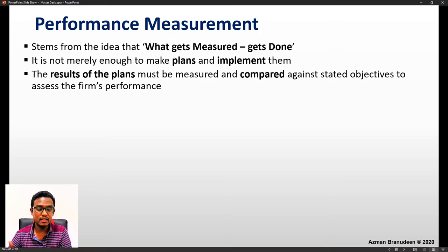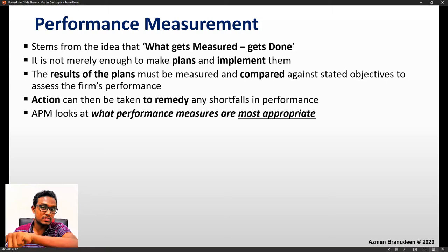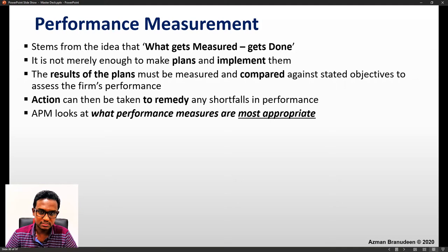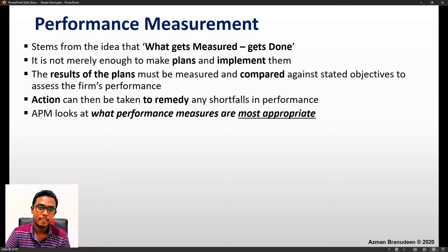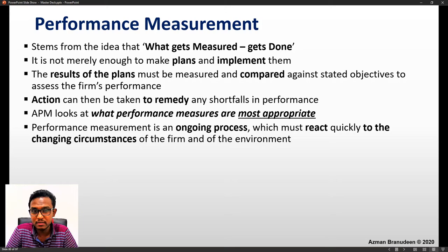You have to compare your performance against a plan, which means you must have measured what you did to understand whether you did well or badly — that is where performance measurement comes in. Action can be taken to remedy any shortfalls, and APM looks at what performance measures are most appropriate. The critical skill is figuring out whether the performance measures used are appropriate to that situation and context. Performance measurement is definitely an ongoing process that must react quickly to the changing circumstances of the firm and the environment.